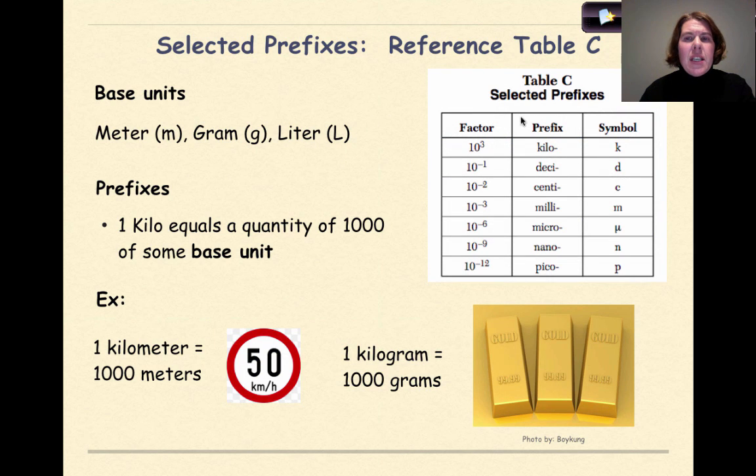Now let's look at reference table C, and reference table C gives us some selected prefixes. But before we get to that, we need to talk about the base units that we commonly use in chemistry. And these are the meter, which measures distance, which we represent as a little m, the gram, which measures mass, which we represent as a little g, and the liter, which represents volume, which we represent as typically a lowercase L.